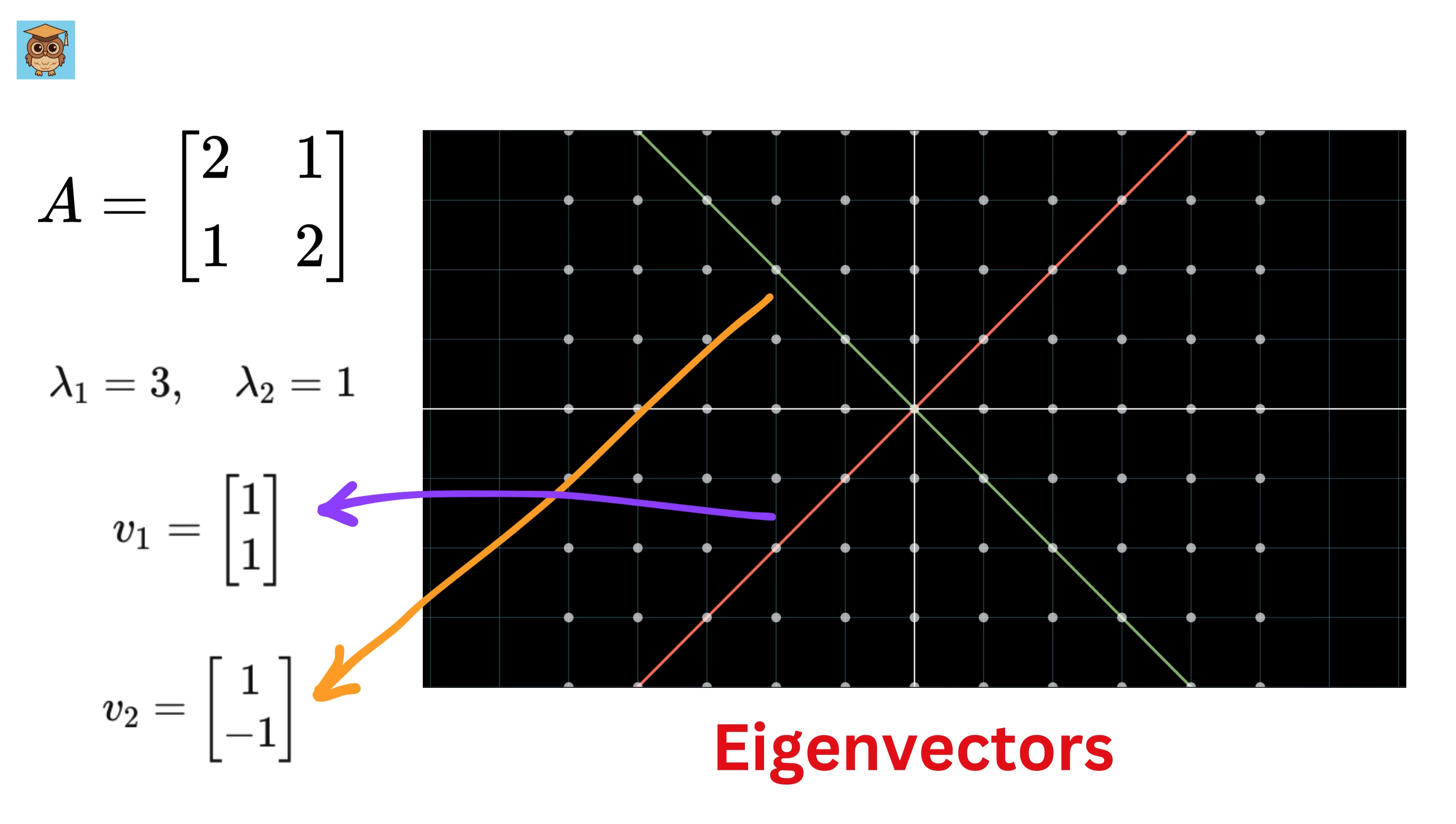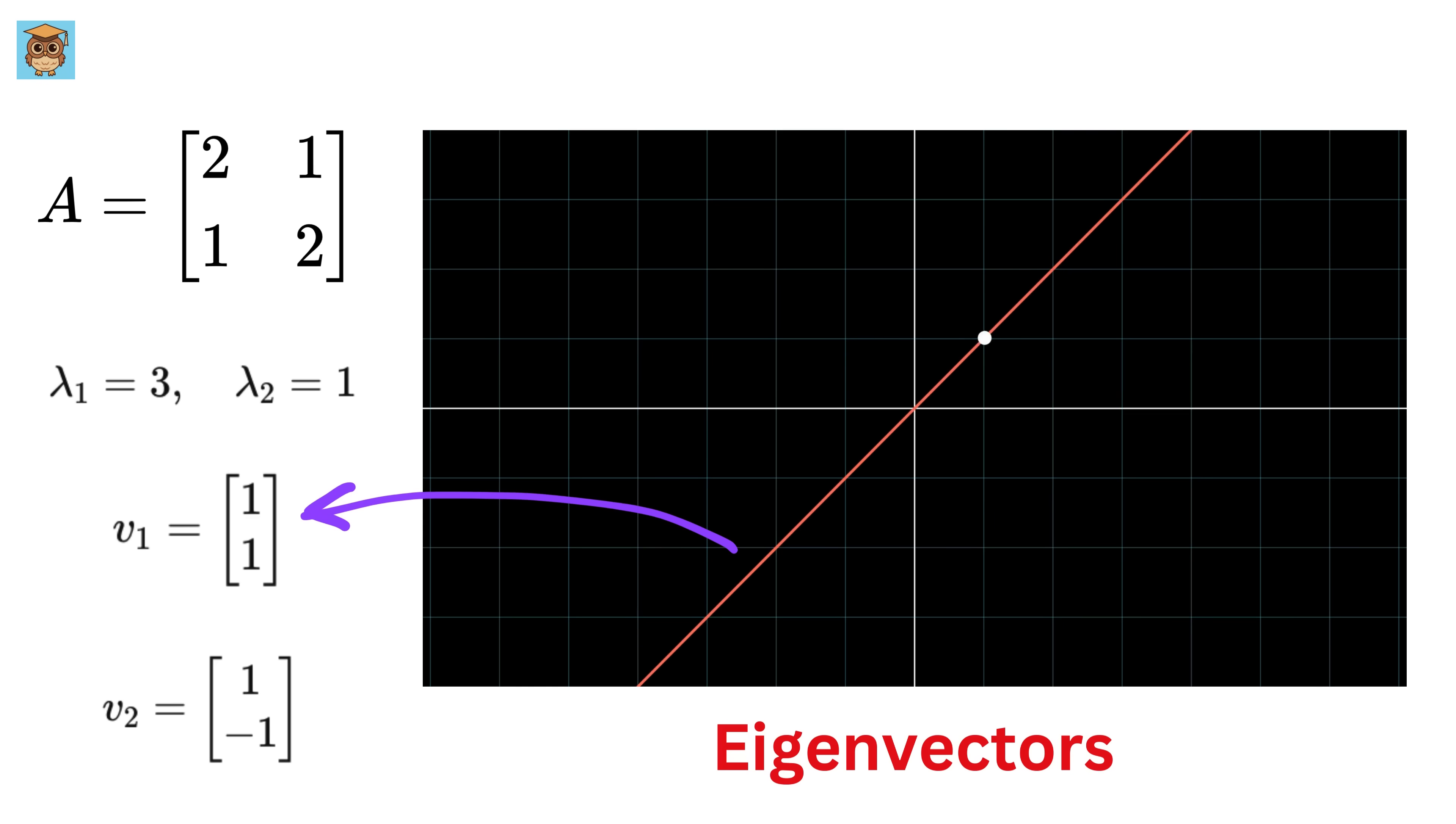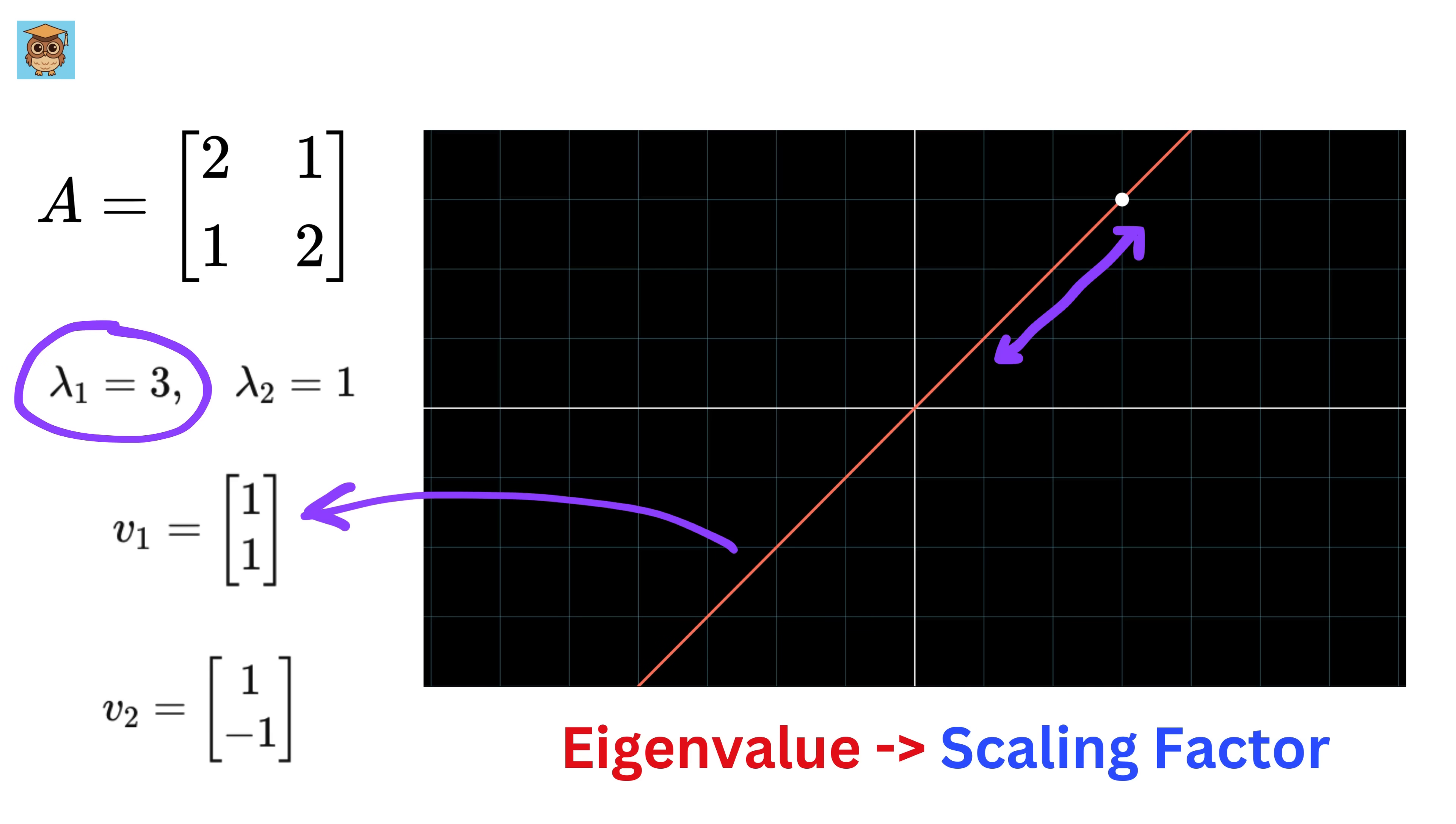That was mind-blowing. Now for this matrix, one of the eigenvectors points diagonally at an angle of 45 degrees, meaning it lies along the line where x is equal to y. This direction stays the same, but the vectors along this line get stretched by a factor of 3. This scaling factor is one of the eigenvalues of this matrix.